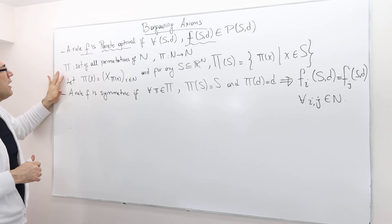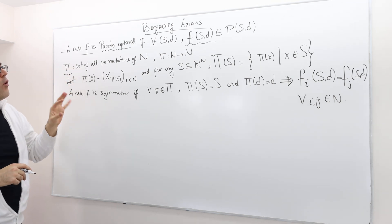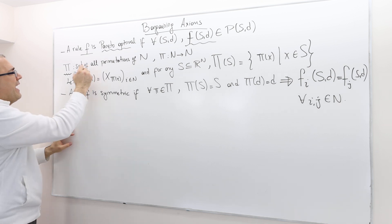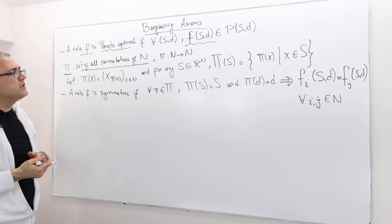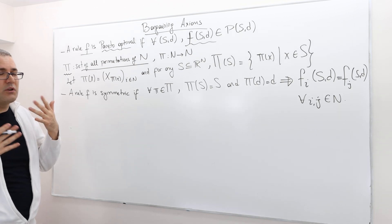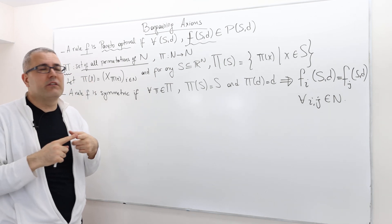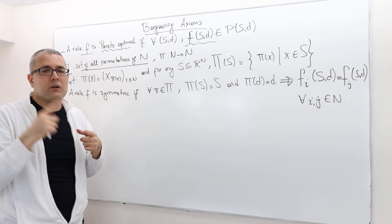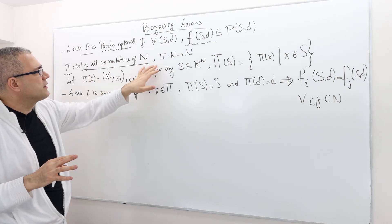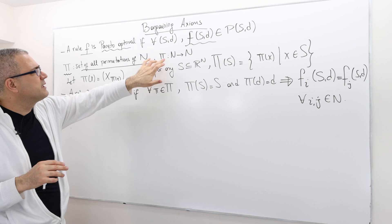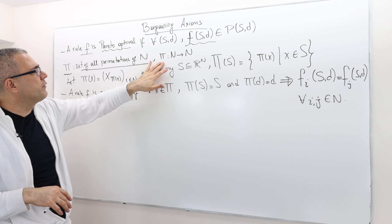We are going to define capital Pi. Pi is the set of all permutations of N. You may hear this for the very first time, but we actually use this concept a lot. In fact, we will use it later in social choice theory as well, and also in matching.